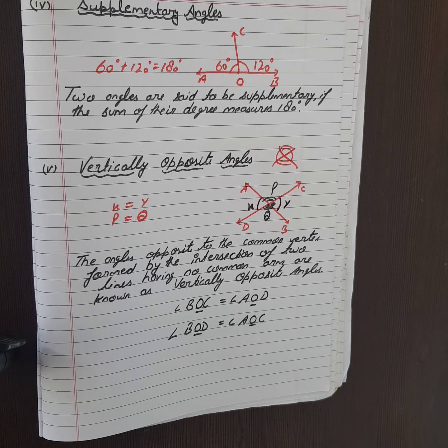Next is vertically opposite angles. In vertically opposite angles, when two cross lines are drawn, two intersecting lines are drawn, their opposite angles are equal always. This angle equals to this, and this angle equals to this.